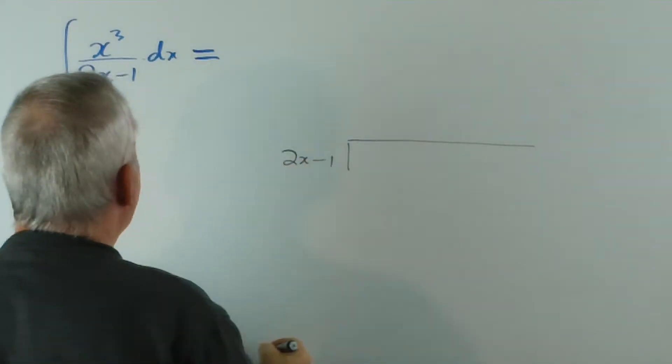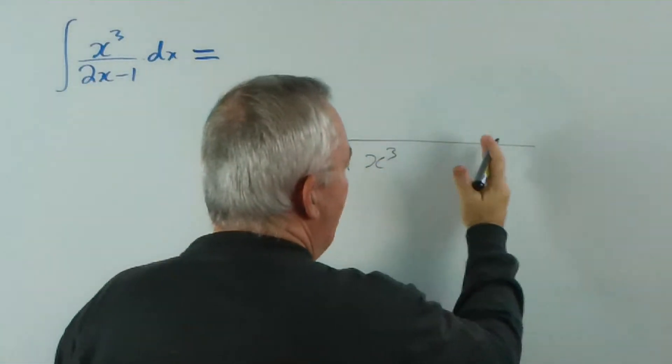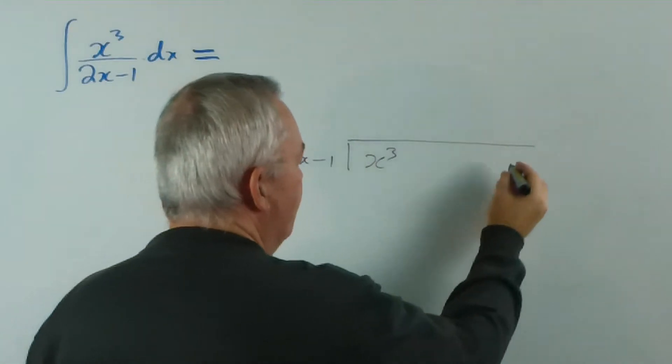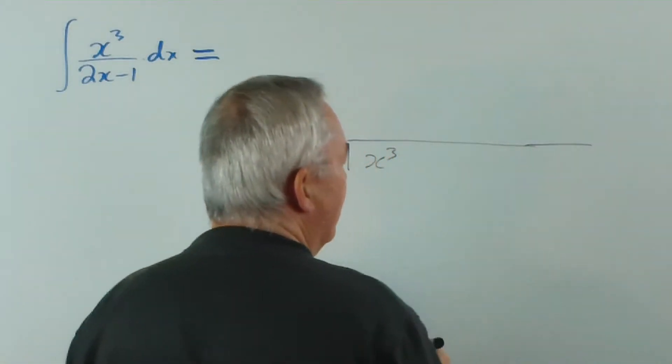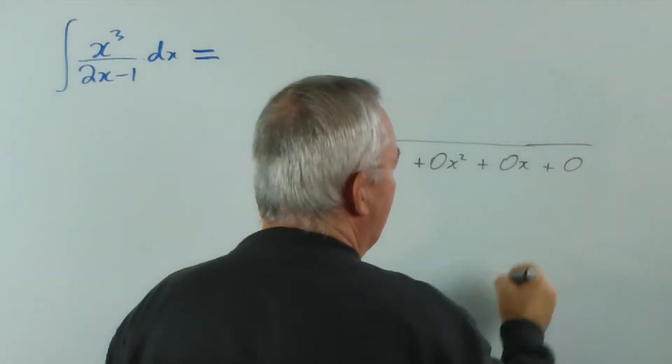But we're going to divide 2x minus 1 into x cubed. And to keep our columns much the same as we would dividing with numbers, we have no x squareds and no x's and no constant.